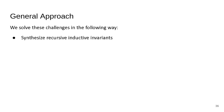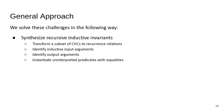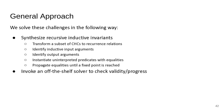We want to synthesize recursive inductive invariants by transforming a subset of the CHCs to recurrence relations. We start by identifying the inductive input arguments, then identify output arguments, then instantiate uninterpreted predicates with equalities between one of the outputs and a function we're creating an interpretation for. Then we propagate these equalities until we reach a fixed point where equality propagation can no longer be applied, at which point we should have a set of recurrence relations.